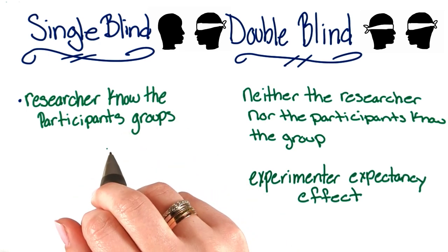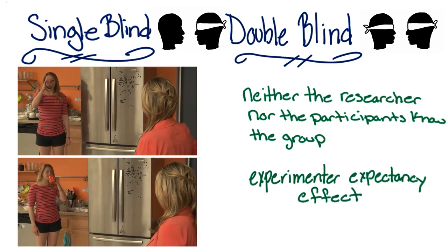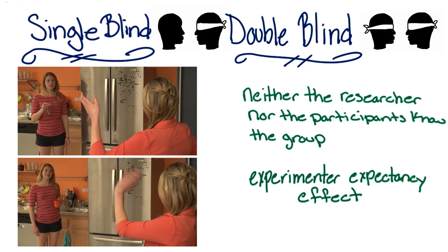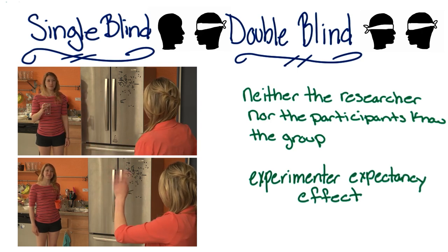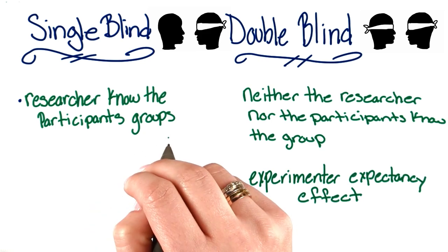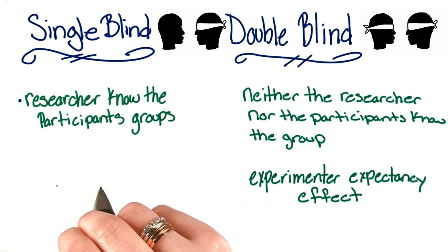When I interact with the subjects to rate their kindness, the belief I have may cause me to be more friendly towards them, which may in turn make the subjects more friendly to me. So my inconsistent treatment between the two groups may result in an unintentional bias, and that can affect the results of my study.